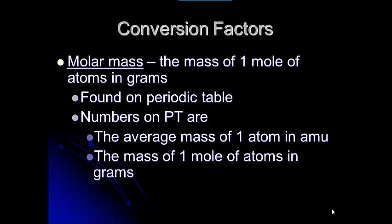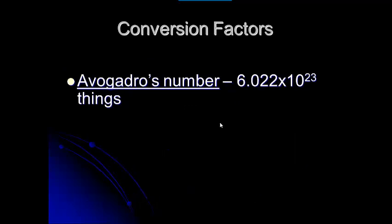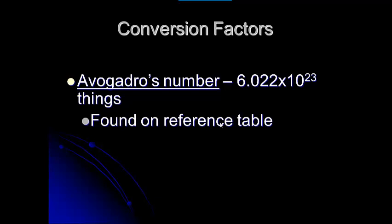That mass on the periodic table, when we use it in grams, represents one mole of whatever that element is. The other conversion factor we want to talk about is Avogadro's number, and it allows us to relate how many things there are — things like atoms and molecules — to the number of moles. I would suggest you look at that on the front page of your reference table.